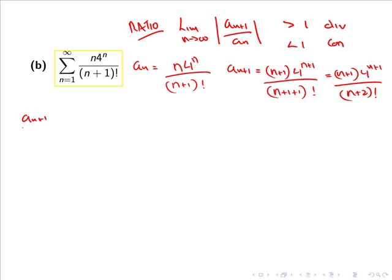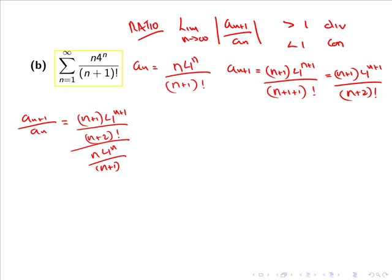So now a_{n+1} divided by a_n equals n+1 multiplied by 4 to the n+1, all divided by (n+2) factorial. As division is the opposite of multiplication, this can be written more tidily as (n+1) times 4 to the n+1, all over (n+2) factorial, multiplied by (n+1) factorial all divided by n times 4 to the n.